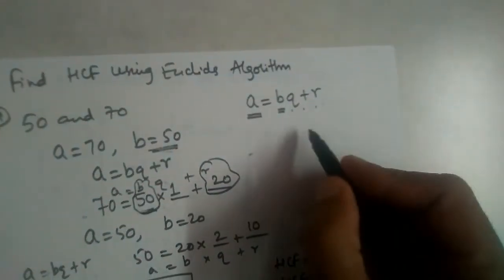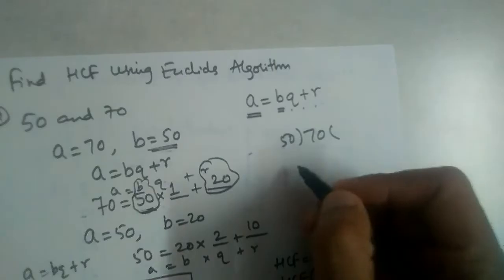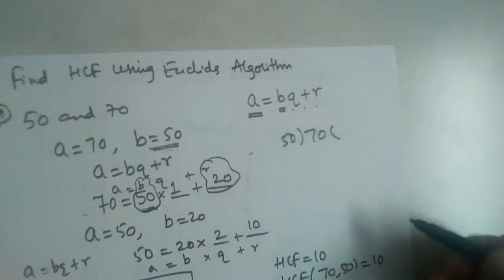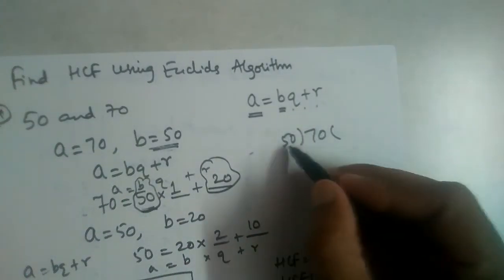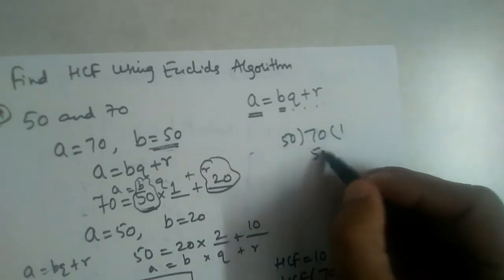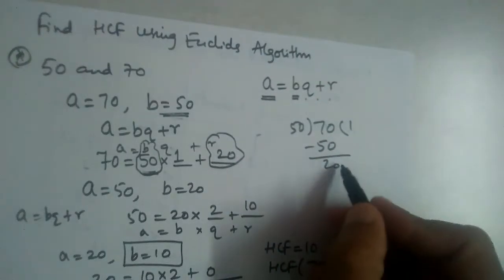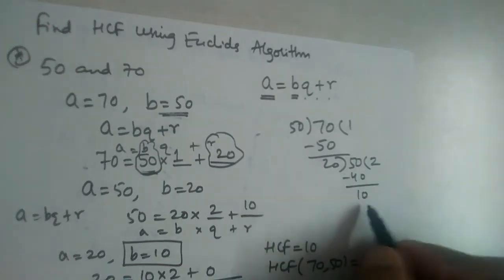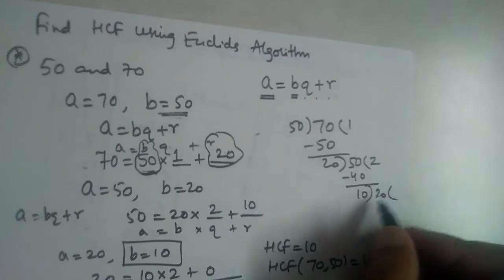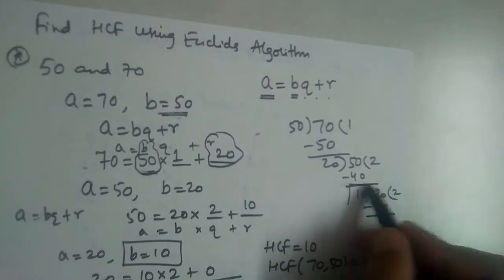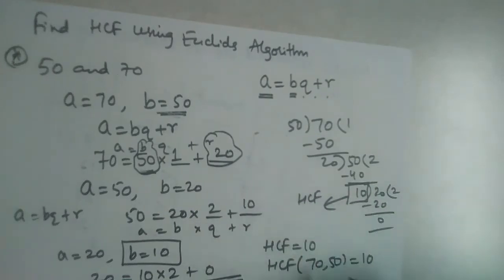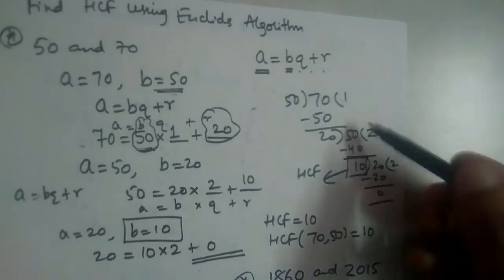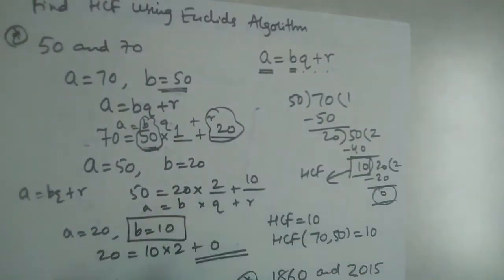There is one more method. We can take 70 and divide by 50 — this will be easier for many students. 70 divided by 50: 50 ones are 50, subtract to get remainder 20. Now divide 50 by 20: 20 twos are 40, remainder 10. Now divide 20 by 10: 10 twos are 20, remainder 0. So HCF is 10. This is actually exactly the same method.